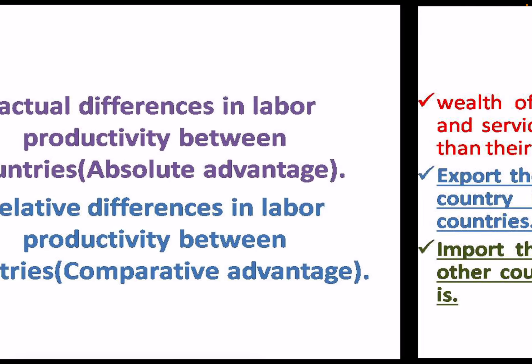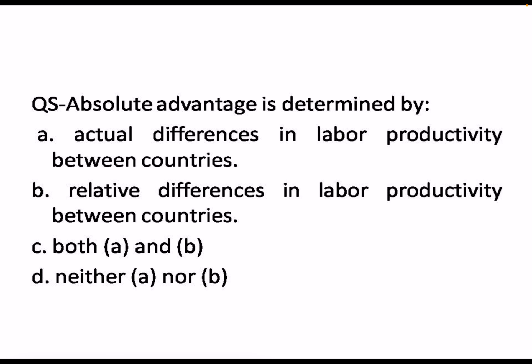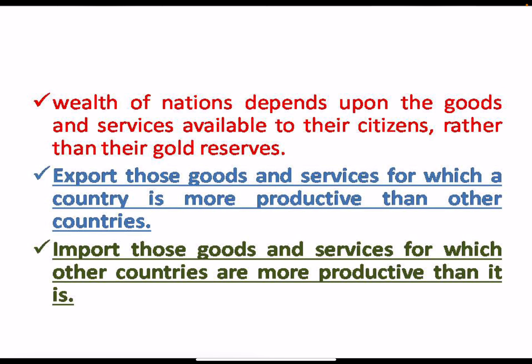An exam question: absolute advantage is determined by actual difference in labor productivity between countries; if it is relative, that is comparative advantage given by Ricardo, not Adam Smith. According to Adam Smith, the wealth of a nation depends on the goods and services available to citizens rather than gold reserves. Countries should export goods and services in which they are more productive than other countries.